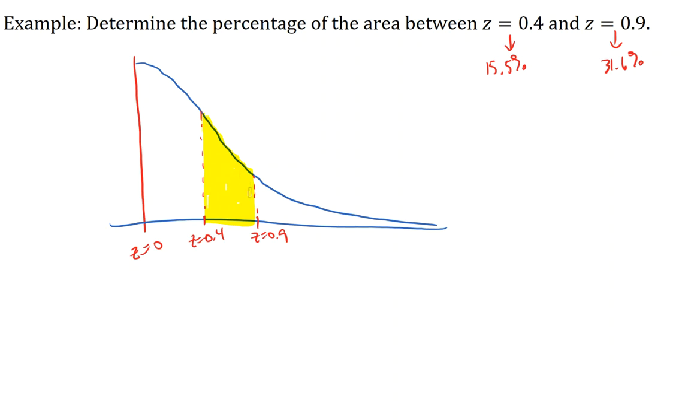So if we were to look at this and interpret what each of these areas represent from our chart, 31.6 percent is the area from the mean over to 0.9, which is this way. So that whole area, that total area, is 31.6 percent. That is not what we want.